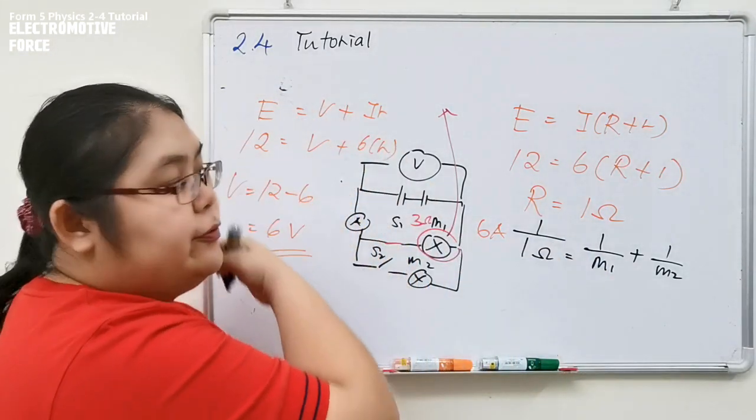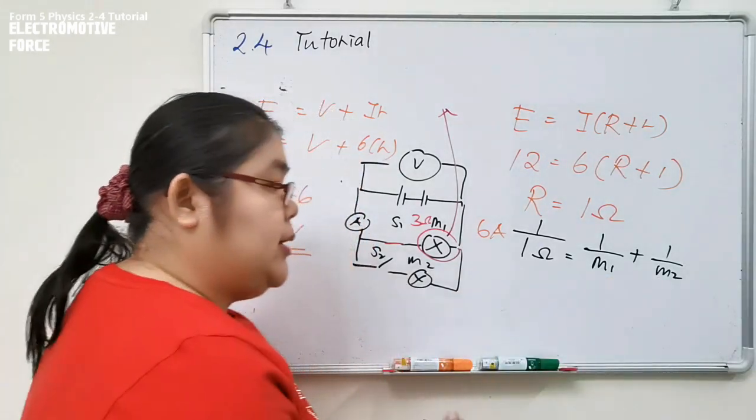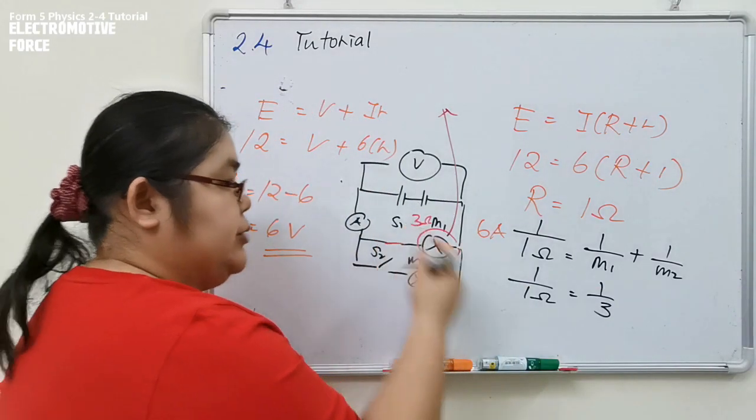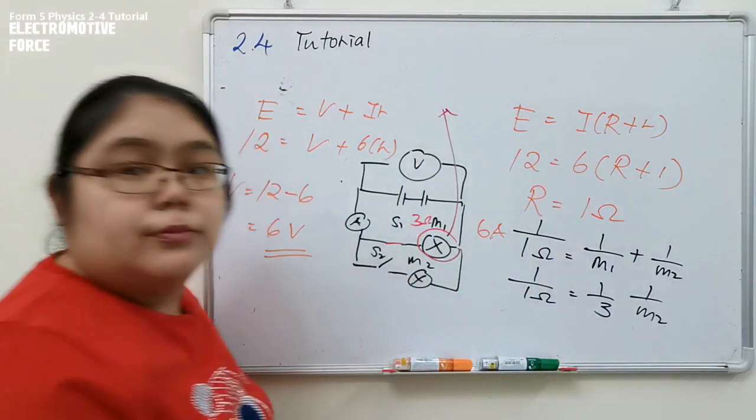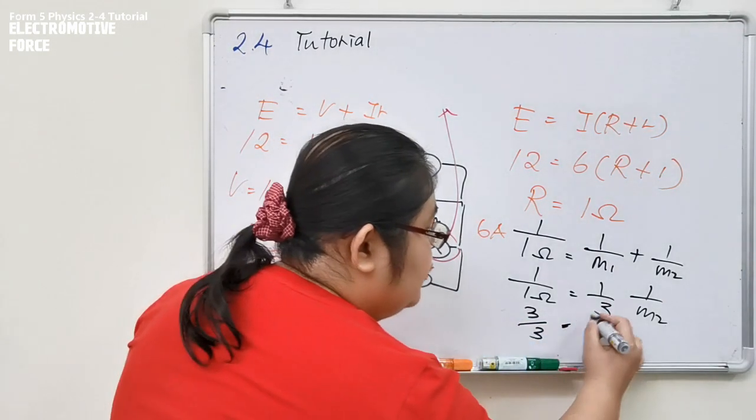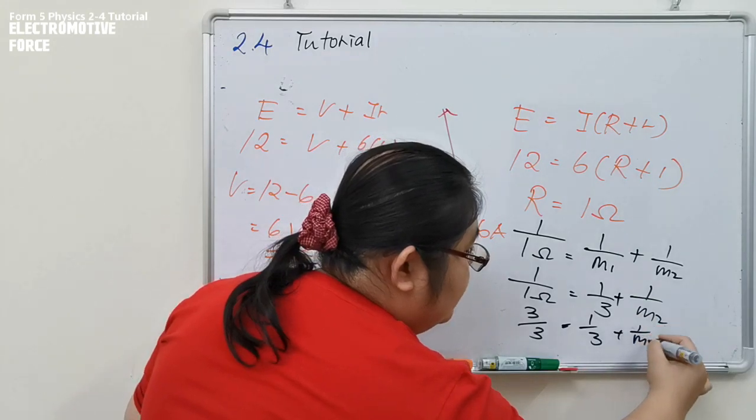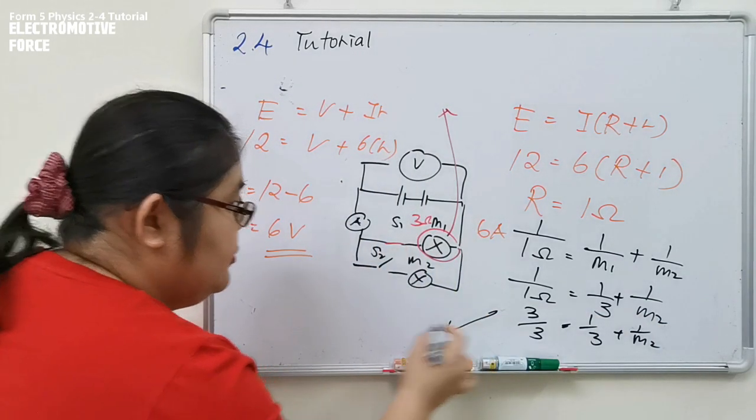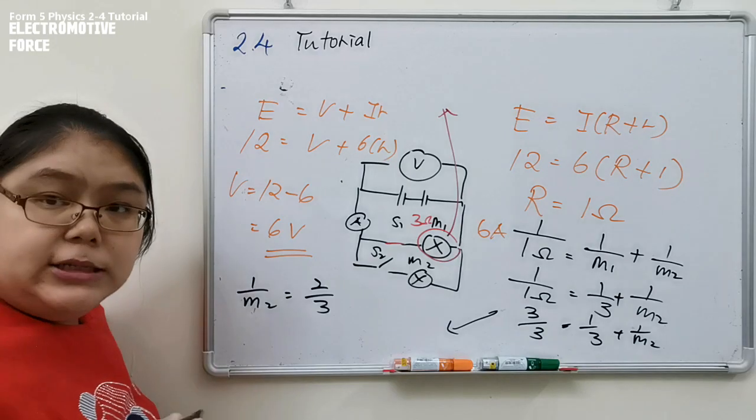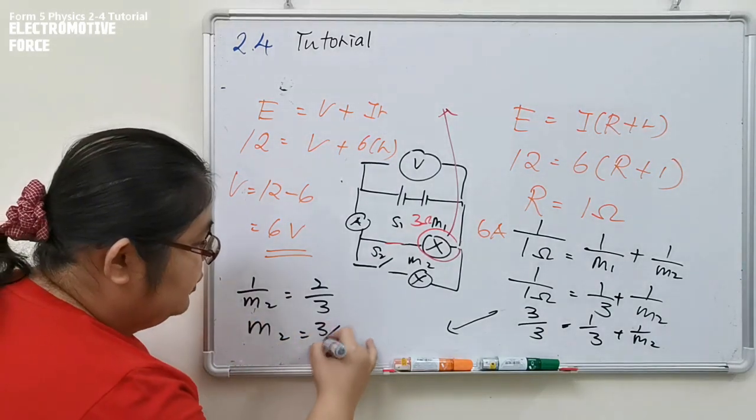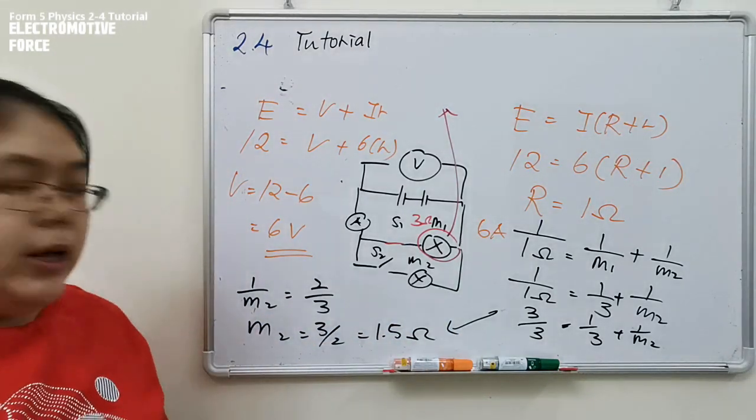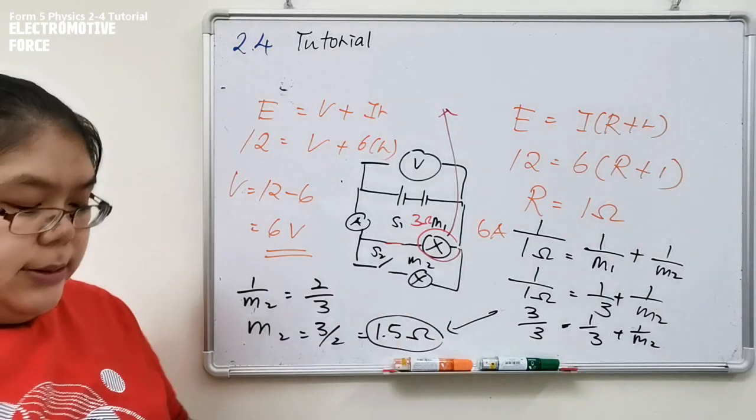So 1 over 1 equals 1 over M1 plus 1 over M2. From here we put 1 over 3 for M1, plus 1 over M2. Making it 3, we get 1 over 3 plus 1 over M2. So 1 over M2 equals 2 over 3. Final answer, M2 becomes 3 over 2, which is 1.5. Cannot be a fraction, write it in decimal form. So this is the final answer for M2.